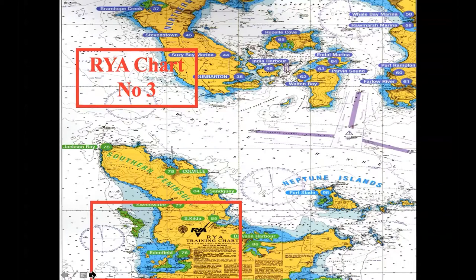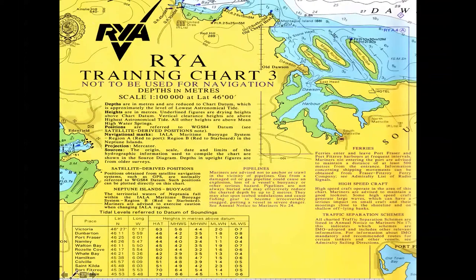The area we're interested in is down at the bottom — that's where the legend is. The Admiralty use a particular colour scheme: land is this yellow colour, anything that dries at low tide is green, and shallow water is two shades of blue. If you're going out in your boat, avoid the green bits because at certain states of the tide they're going to be land.